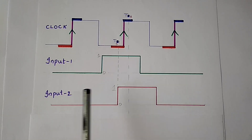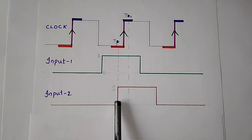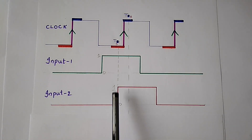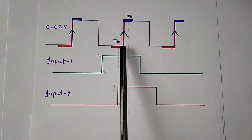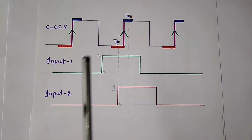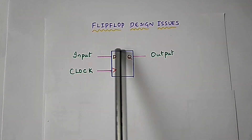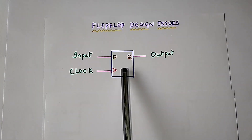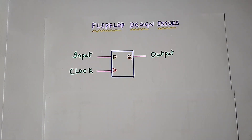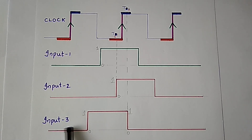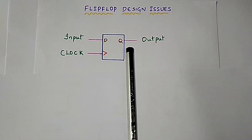When input two is given, since there is a signal transition from zero to one during the setup time, the flip-flop suffers from a setup time violation.